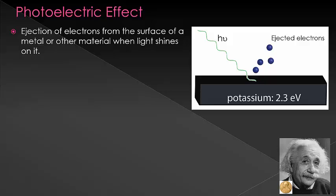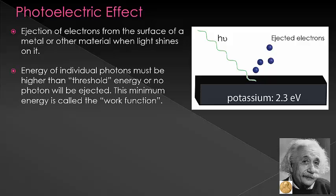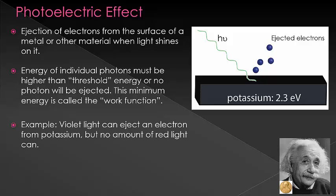Let's take a quick example to illustrate this. If we have potassium metal and we shine different energies of light on it, we will get drastically different results. Violet light, which has a higher energy and frequency than red light, will eject electrons. However, no amount of red light can do this. Even if we shine the brightest red light possible on the metal, no electrons would be ejected. Conversely, we can shine only a tiny bit of violet light and still get ejected electrons.